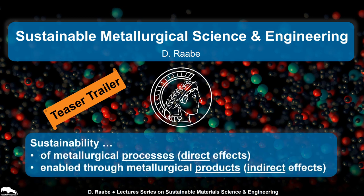This lecture is only a concise teaser. It gives a first impression of the contents of the entire lecture series which will follow this introduction. We discuss sustainability in terms of two aspects. The first one is the sustainability of metallurgical processes, which we refer to as direct sustainability. The second one covers sustainability improvement enabled through the use of advanced materials. We call this indirect sustainability.